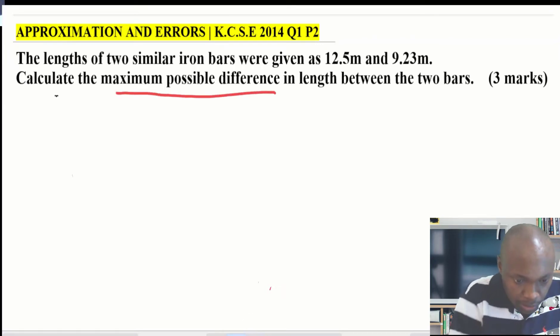Getting the maximum possible difference in length between the two bars. The two bars, the lengths are given: 12.5 meters and 9.23 meters. What you're supposed to do first is get the limits within which these measurements or the lengths lie.